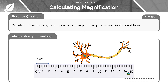Now we move on to our third example: calculating the actual length of this nerve cell in micrometers, with the answer given in standard form. Note that we aren't given a magnification directly, so we'll have to work that out from the scale indicator provided. Also note the question asks for the answer in standard form — an easy mark to get, so don't forget. Pause the video and try to work this out.